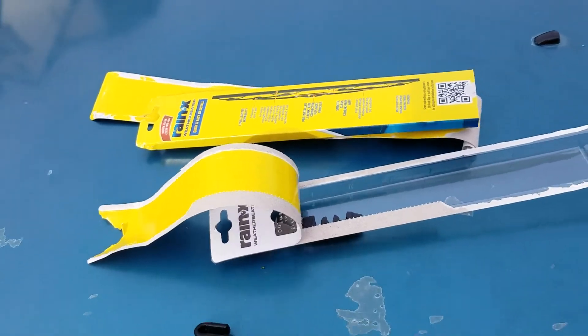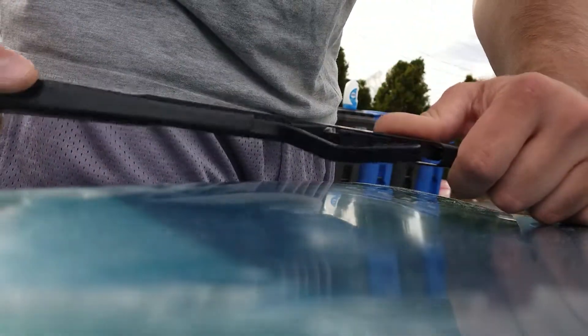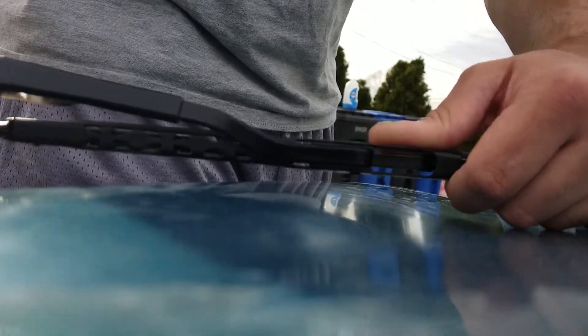Alright, so you grab your wiper blade, and what you do is you hook it on like this and you slide it until you hear a click. Once you hear that click it's perfectly on and then you put it on the car.